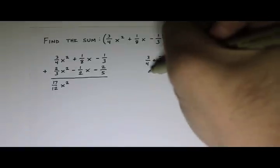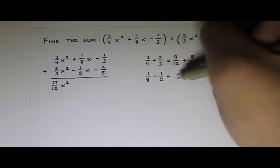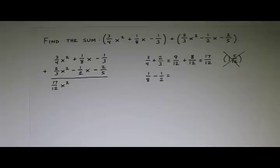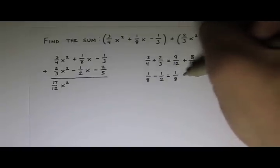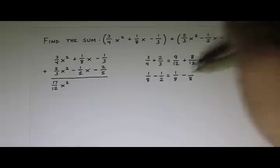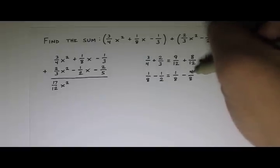Next we have 1/8 - 1/2. So I think the common denominator here is 8. We already have an 8 here, so that's going to stay 1/8. And this is going to get an 8. 2 times 4 is 8, 1 times 4 is 4.